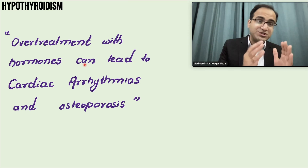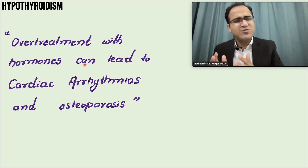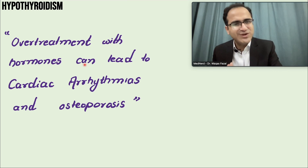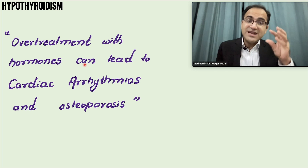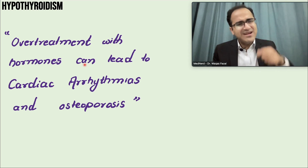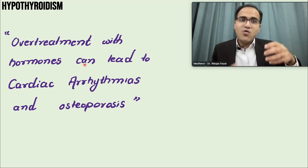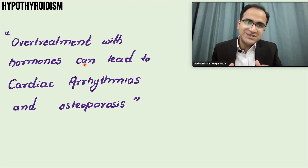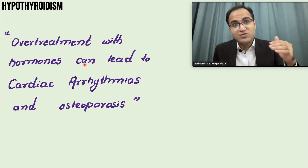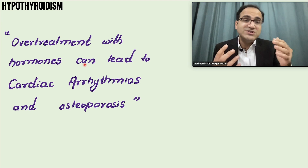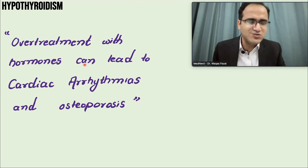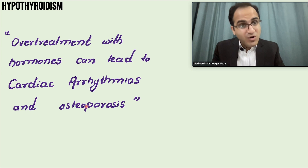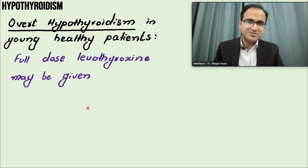Always check for cardiovascular risk factors in patients with hypothyroidism. If the patient has ischemic heart disease, heart failure, or any cardiovascular history, they are at increased risk. Thyroid hormones are basically the fuel of the body — when given to patients with ischemic heart disease at an unadjusted dose, they can develop arrhythmias and die. A reduced dose is given to these patients. Thyroid hormones can also cause osteoporosis.